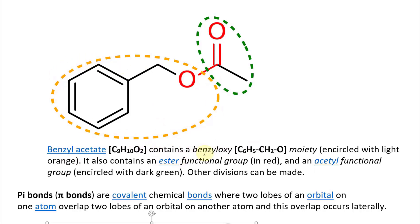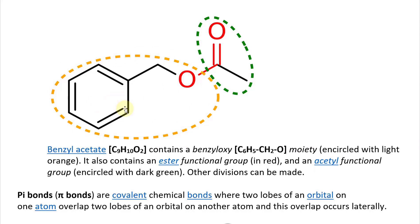Looking closer, the orange circle is the benzyloxy moiety. The C's and H's are all included in that structure. The orange one is this moiety — it's given a name because it's inside other molecules. That's light orange.